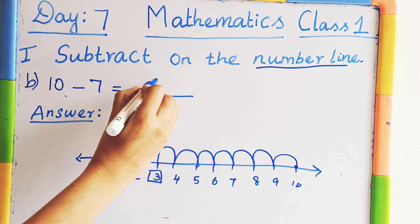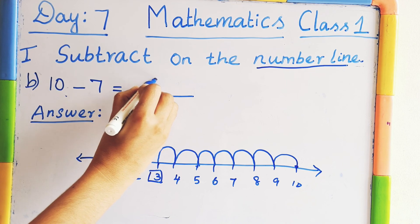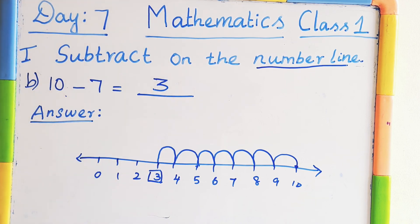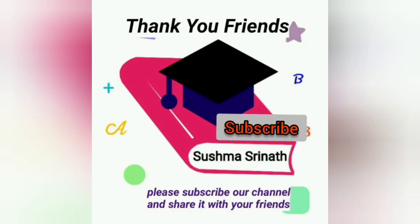10 minus 3. 10 minus 7 equal to 3. Thank you friends. Please subscribe our channel and share it with your friends.